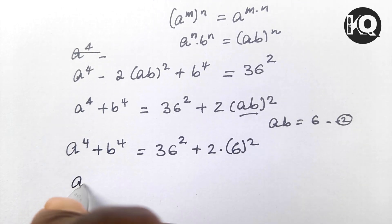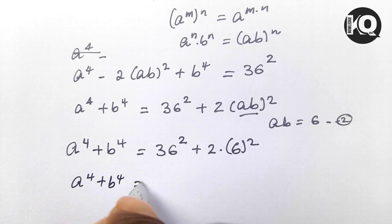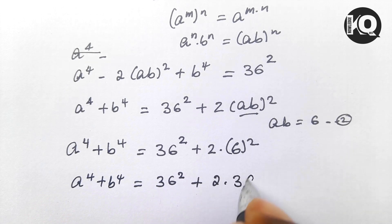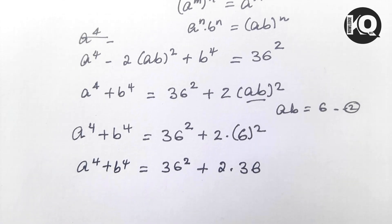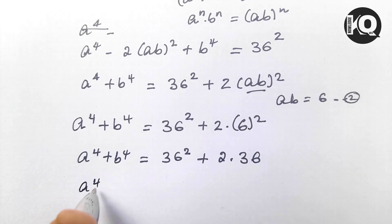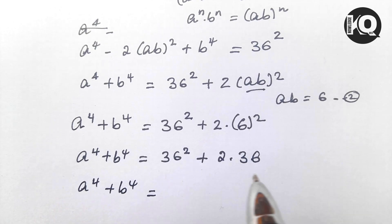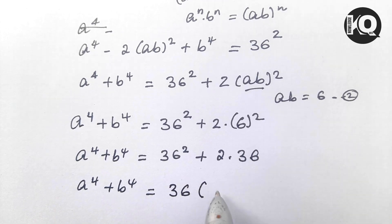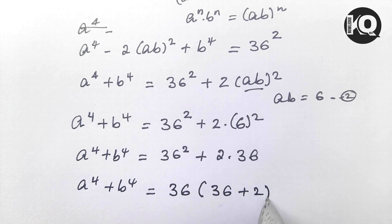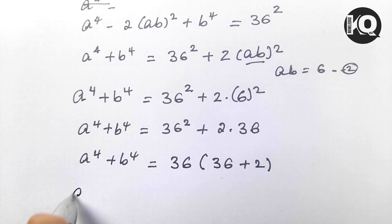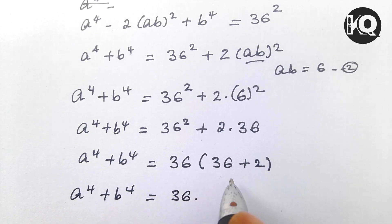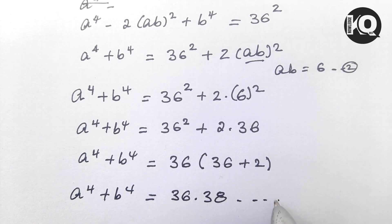So a⁴ + b⁴ = 36² + 2·36, since 6² = 36. We can factor out 36: a⁴ + b⁴ = 36·(36 + 2) = 36 × 38. Let's call this equation 3.